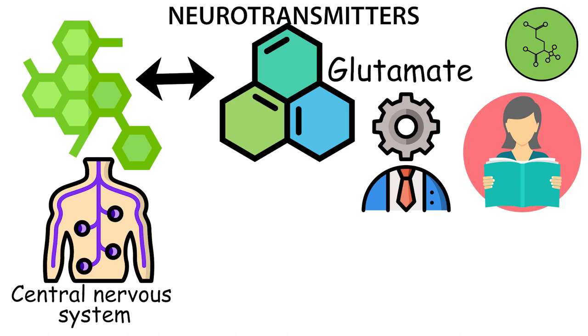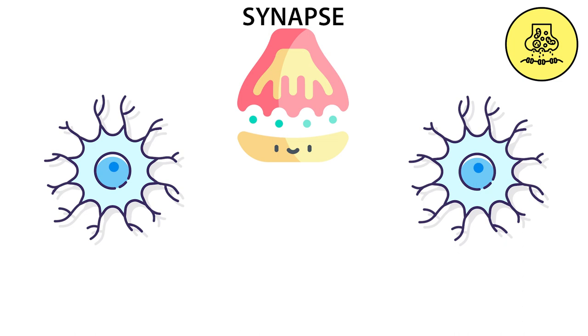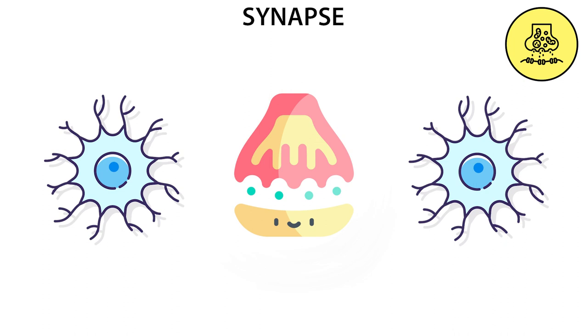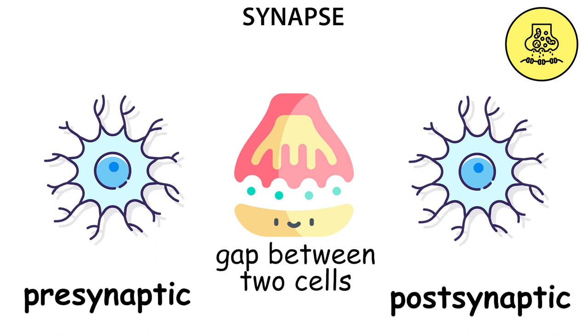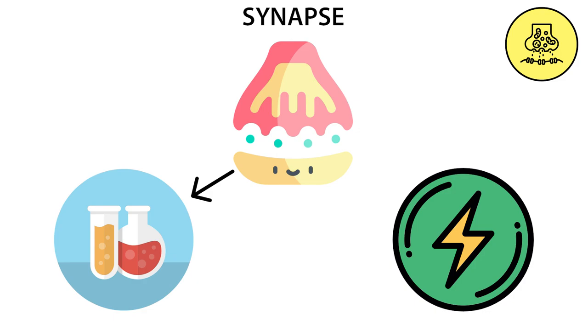A synapse is the place where neurons exchange information. It is not a physical component of a cell, but rather the name of the gap between two cells, a presynaptic and a postsynaptic cells. There are two types of reactions possible at interneuronal synapses: chemical reactions or electrical reactions.